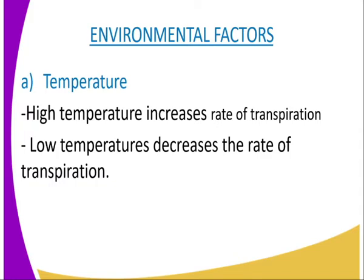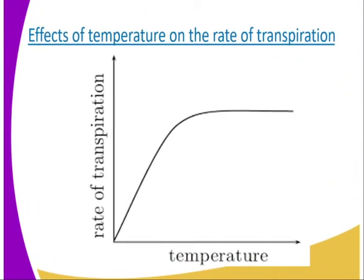In low temperature the rate of transpiration is reduced. As you can see from our diagrammatic representation, the x-axis represents temperature while on the y-axis we have the rate of transpiration. The rate of transpiration increases steadily as the temperature increases, but it reaches a point whereby it starts leveling off. This is because the temperatures have gone so high that the cells are not able to cope — remember, cells are denatured by temperatures above a certain degrees Celsius. So an increase in temperature leads to a direct increase in the rate of transpiration until it reaches the optimum, which is the point where it levels off.